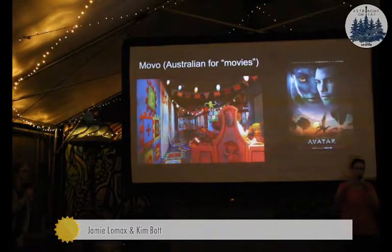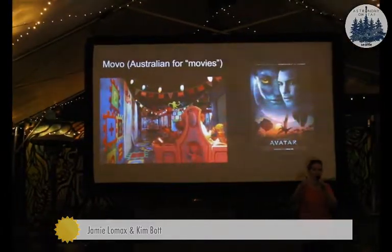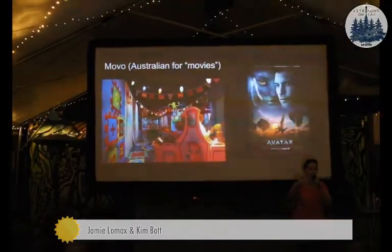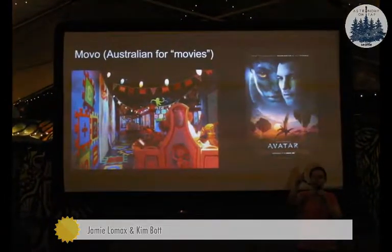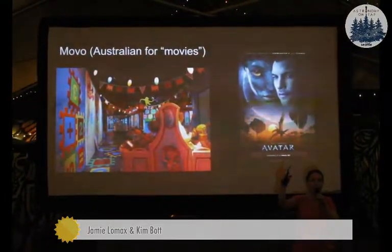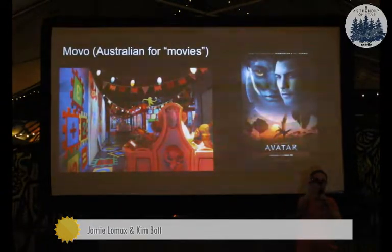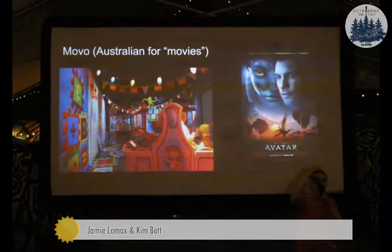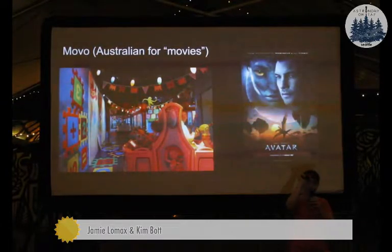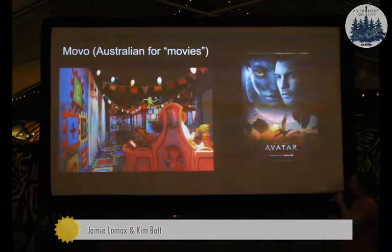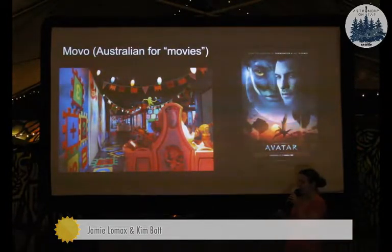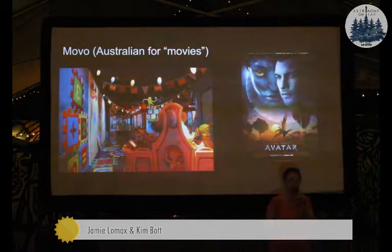Light from computer monitors and laptop screens is also polarized. I have a pair of polarized sunglasses — if you want, after the talks and the laptops are still on, you can come up and rotate them. At some angles you'll be able to see the screen, and at other angles it'll look completely black because it's filtering out all the light. But the other place that you really use this a lot in your life is when you go to a 3D movie.